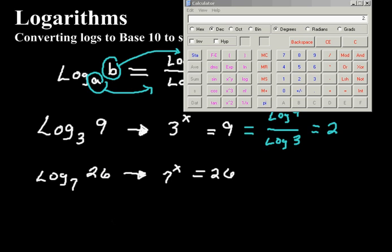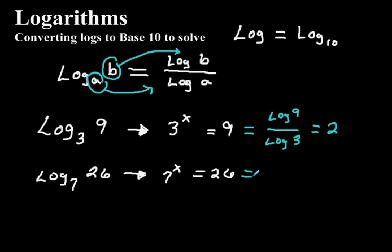So if we were going to first of all rewrite this one, let's put it in form. We would put the log 26 on top like this, and we would put the log 7 on bottom like that.